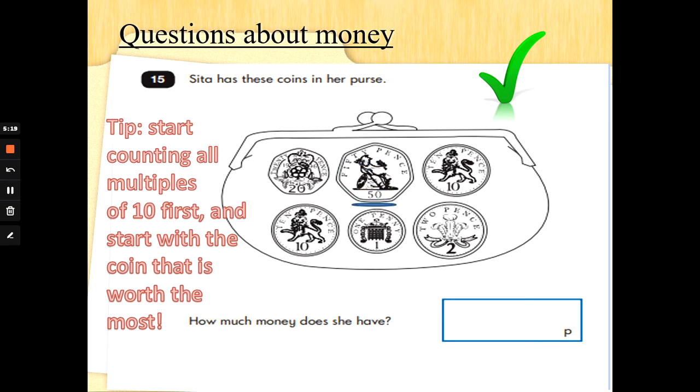We're going to start counting from 50 pence. Then we've got 20 pence there. So we've got 50, 60, 70. We've got a 10 pence there which is one more 10. So 50, 60, 70, 80. We've got another 10 pence there. 50, 60, 70, 80, 90. And then we've got a 2 and a 1. 2 add 1 is 3. So all together we've got 90 in 10 pence and multiples of 10. And 3 in 3p with the 2p and the 1p.